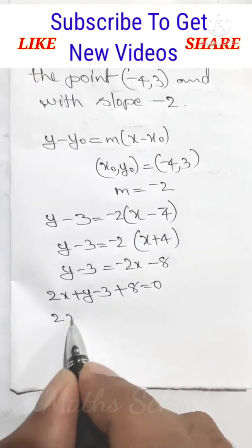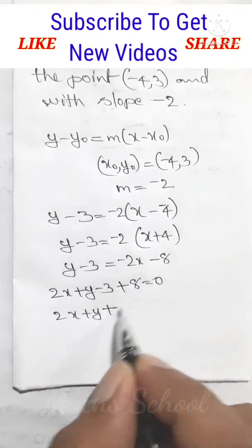y minus 3 equals -2x minus 8, or 2x plus y minus 8 equals 0.